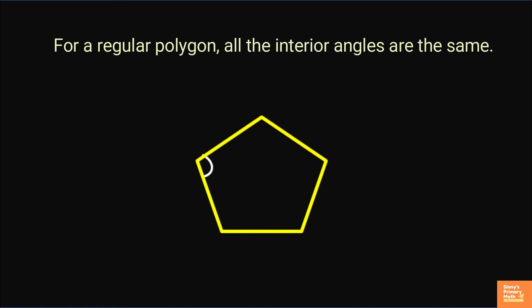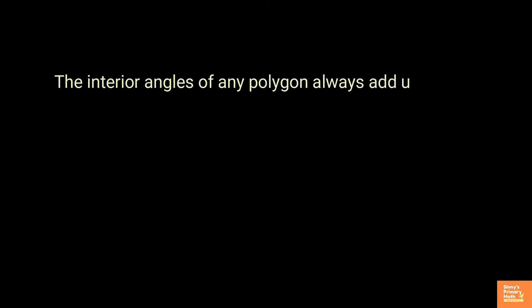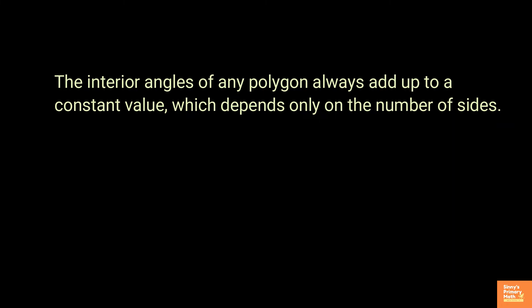For a regular polygon, all the interior angles are the same. The interior angles of any polygon always add up to a constant value, which depends only on the number of sides.